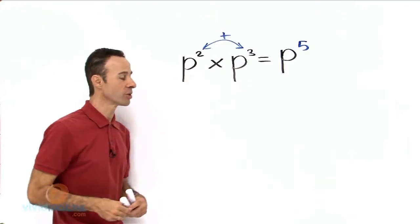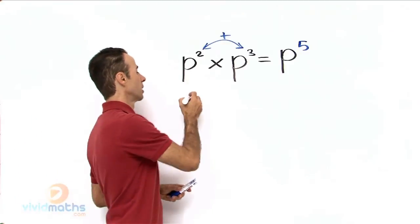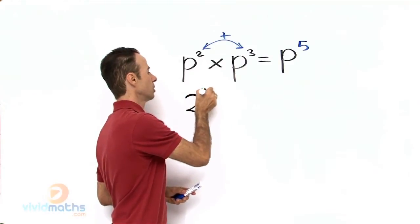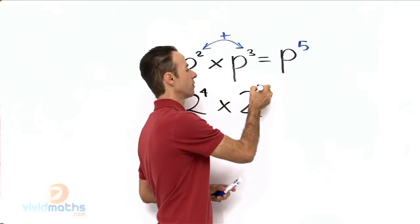Let's say, for example, we are doing this without a pronumeral. We are doing it with numbers, and we could say 2 to the power of 4 times 2 to the power of 5 equals.